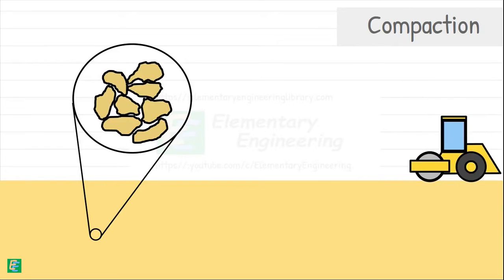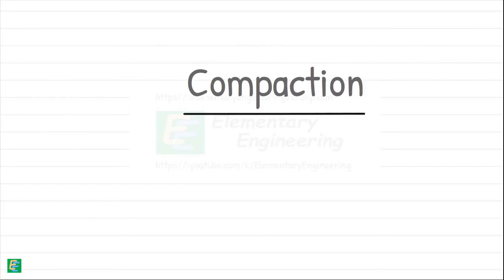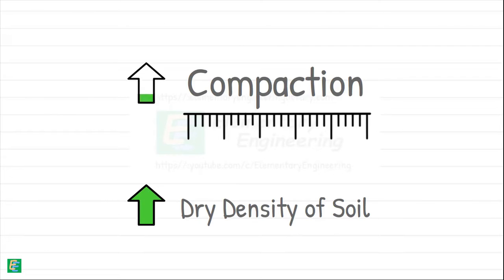It is done using heavy machinery and equipment. Compaction is measured using dry unit weight or dry density of soil. Higher the dry density, higher is the compaction.